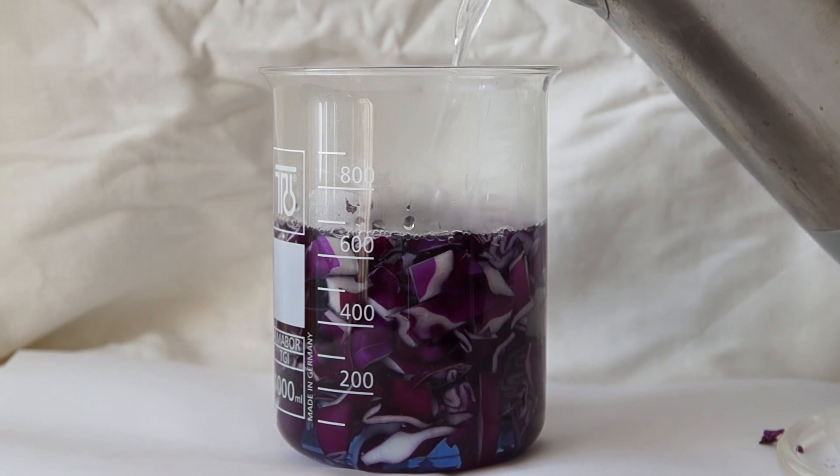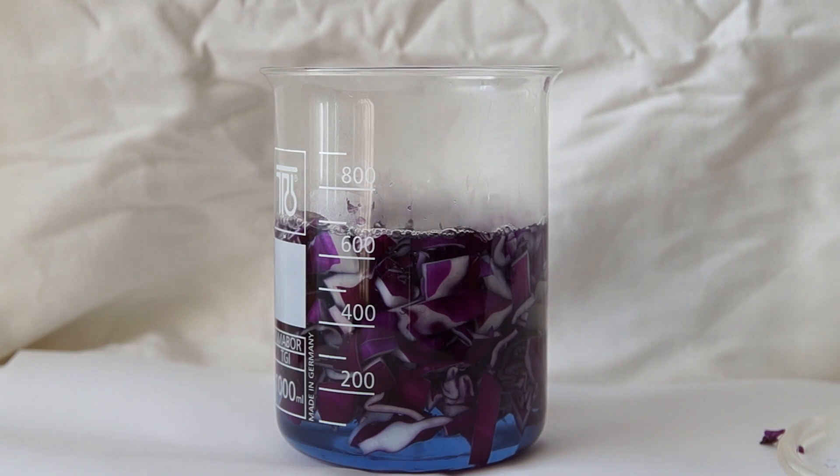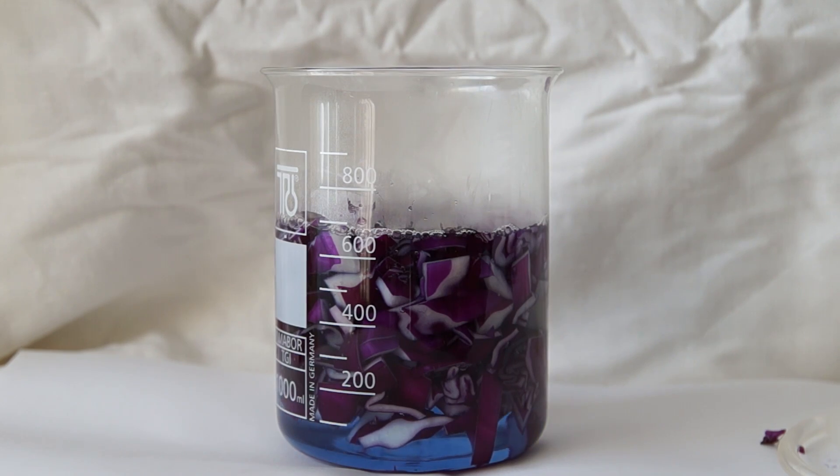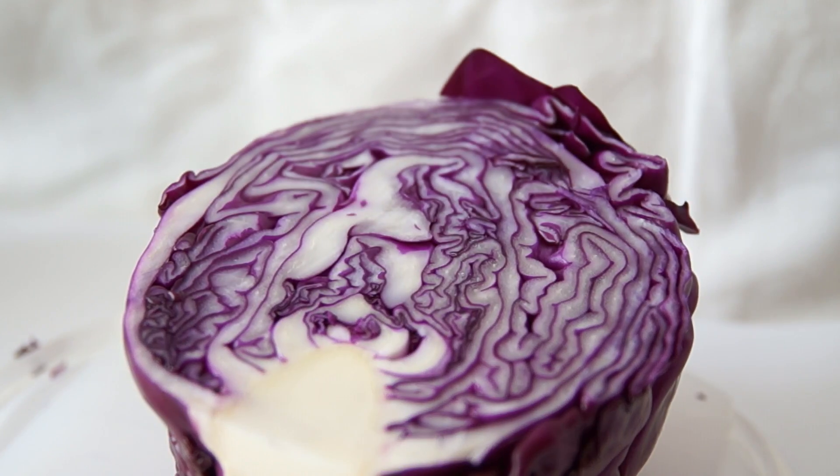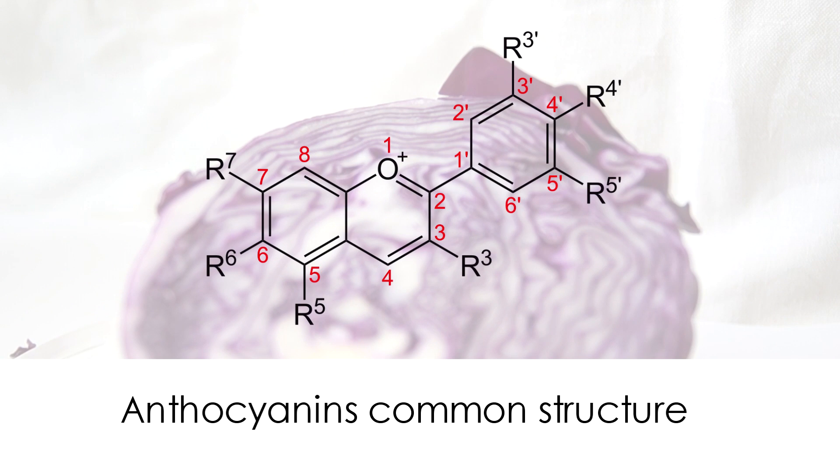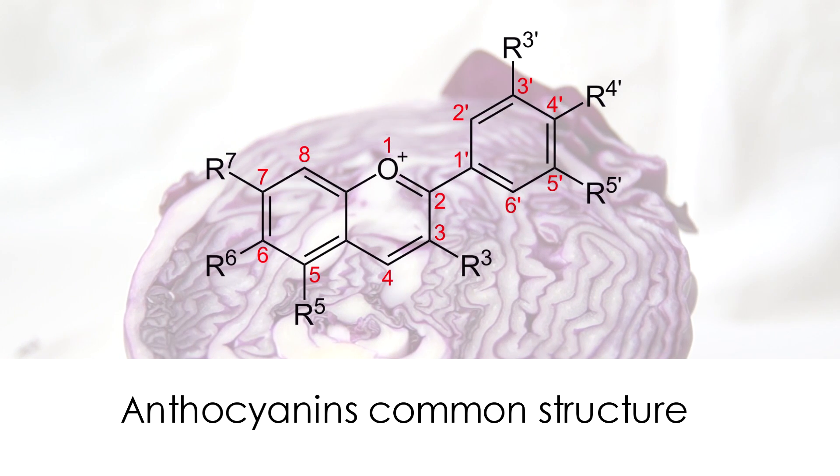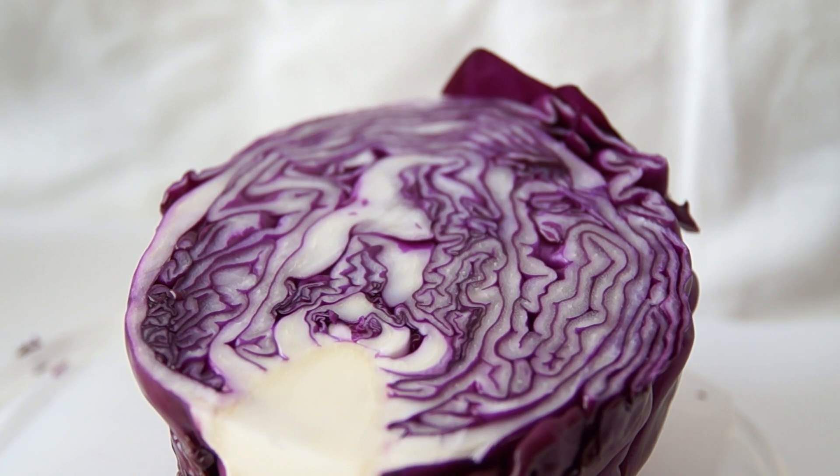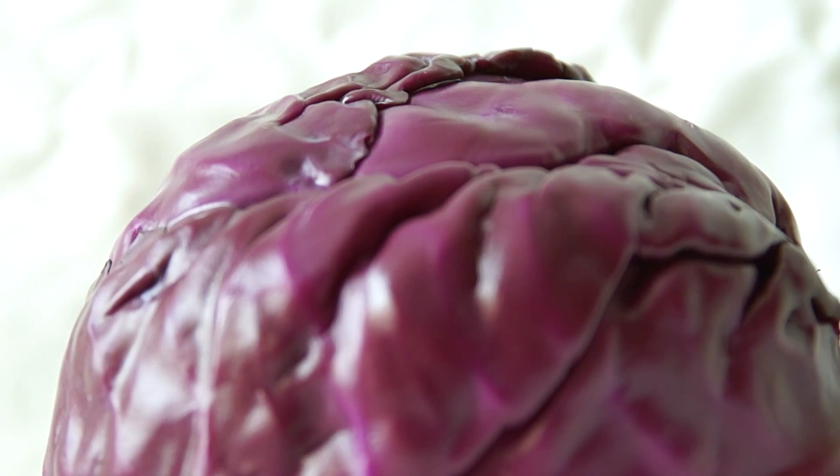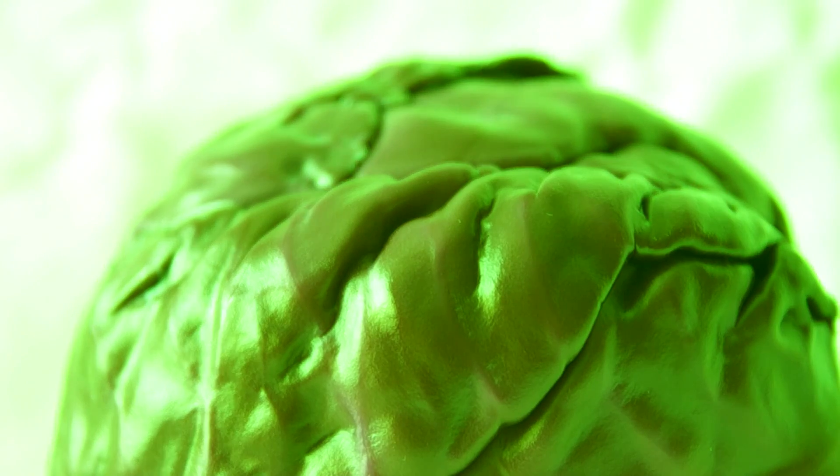Now I will explain why we do it. Red cabbage, as well as many other vegetables, contains natural dyes, anthocyanins, which give the fruits and leaves different colors. The color of these substances will depend on the acidity of the environment. When the acidity changes, the color changes as well.